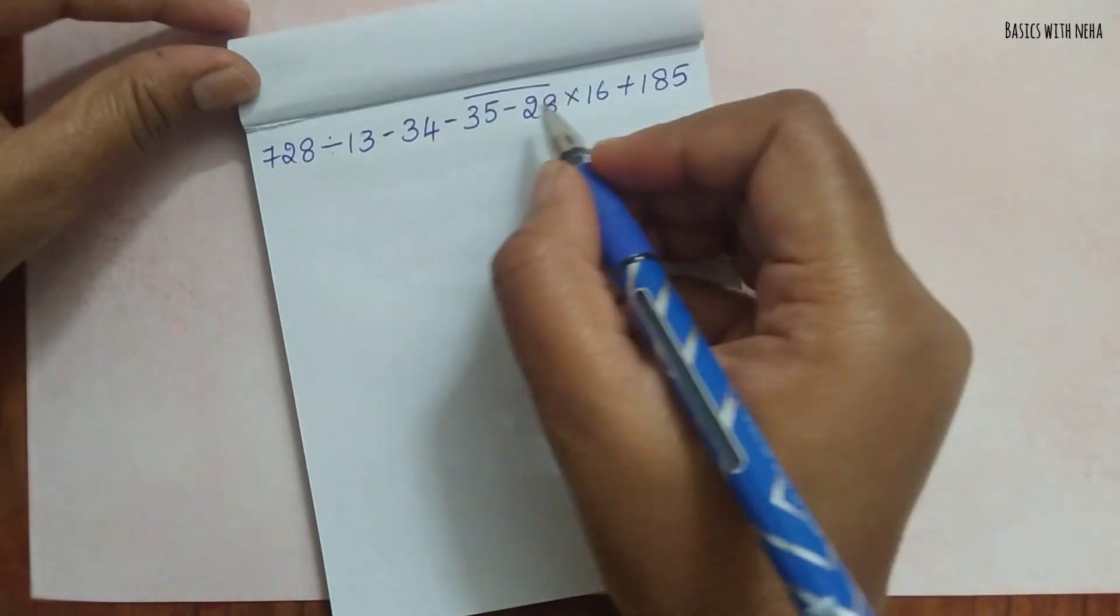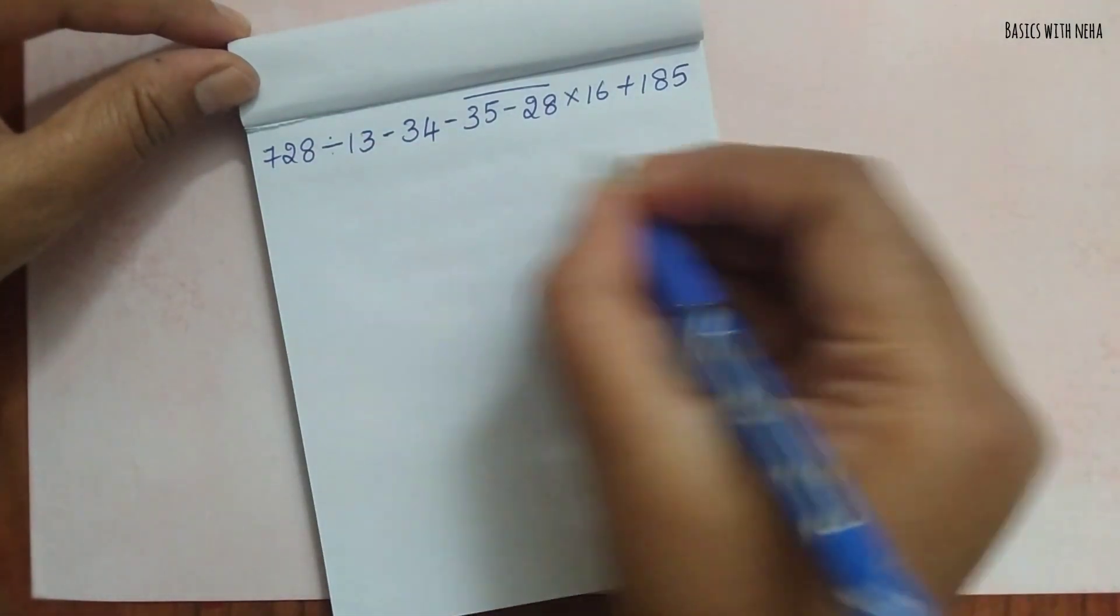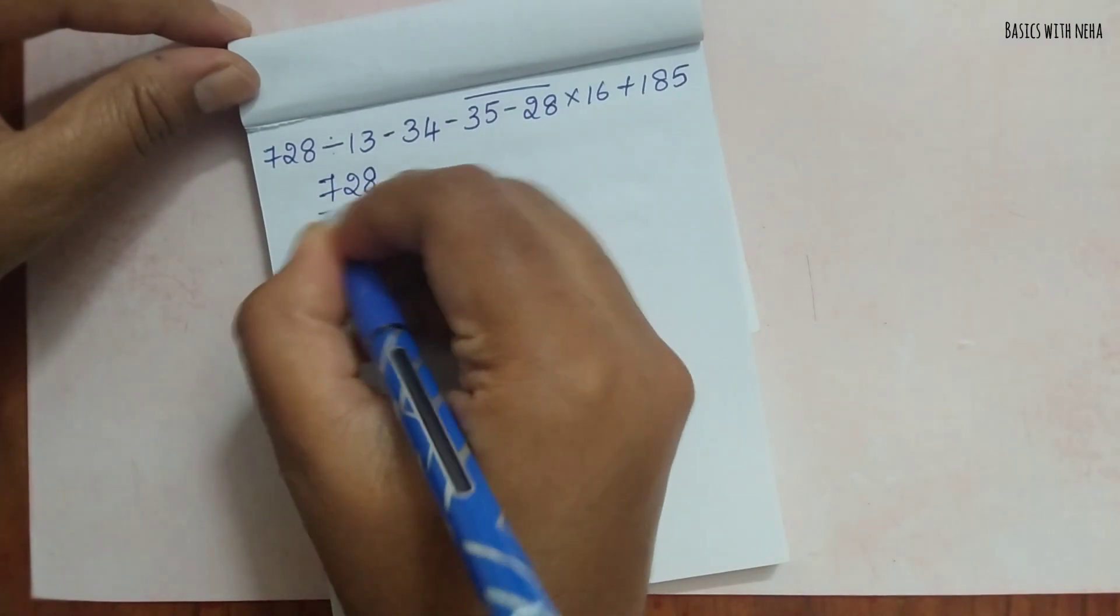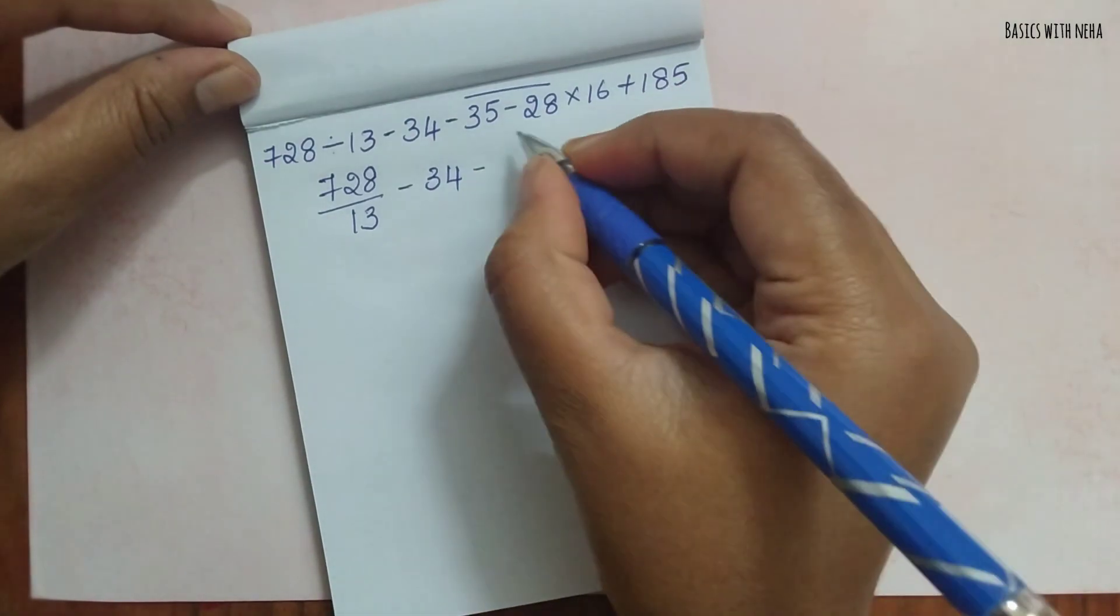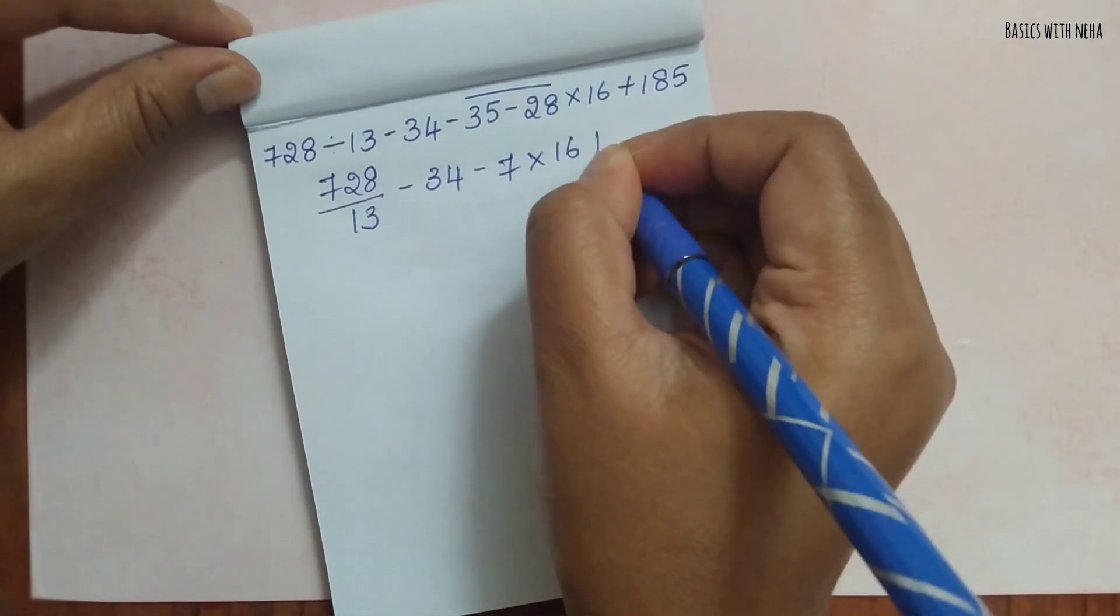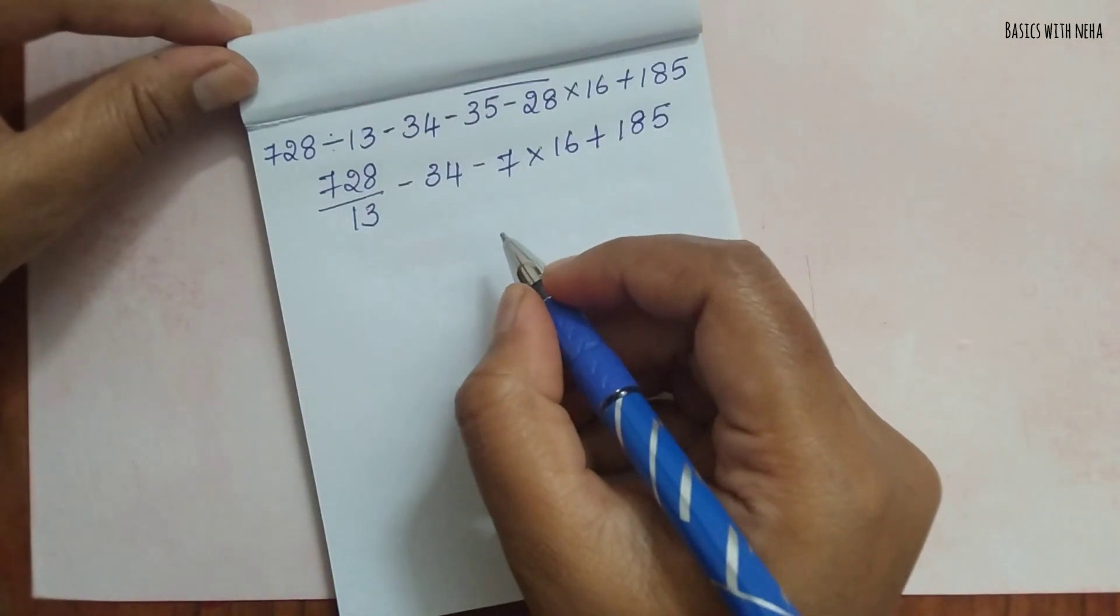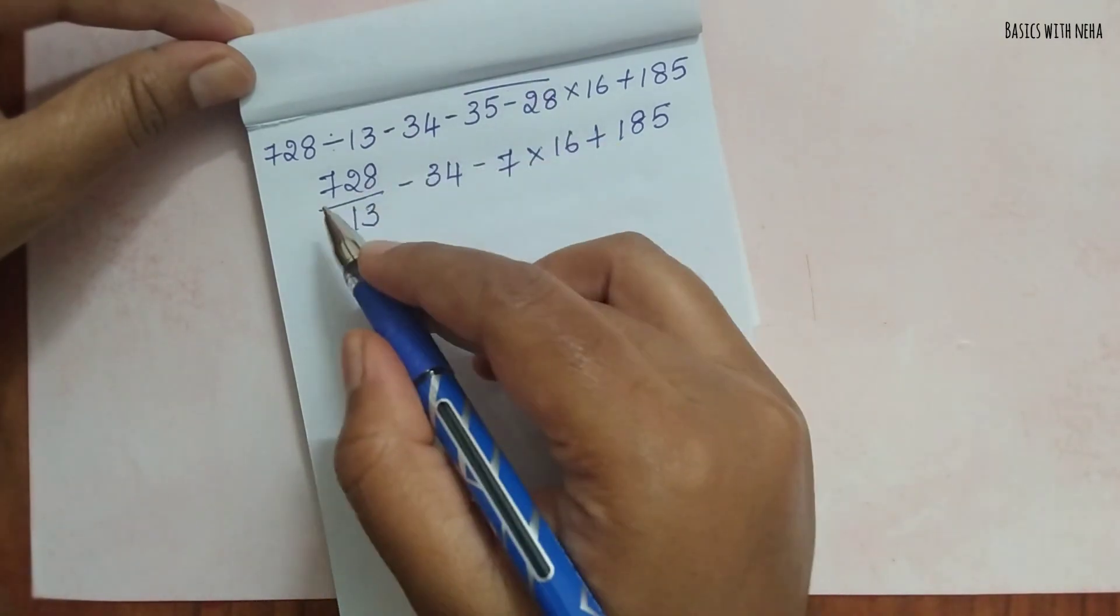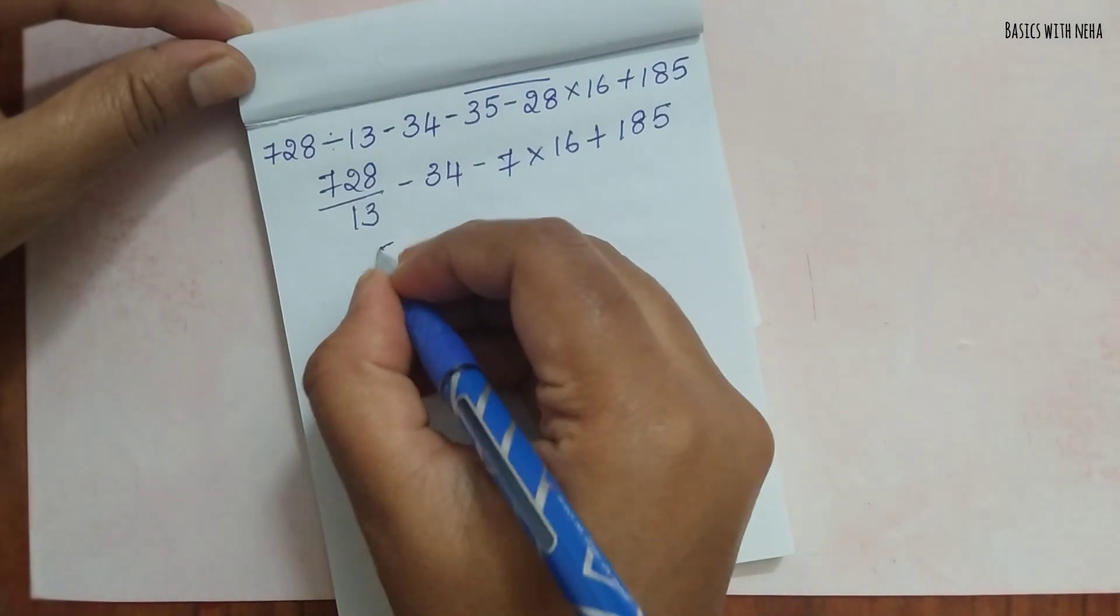I'm solving this question. So first we should remove this bar bracket. If I'm going to write in the next line, it will be 728 divided by 13 minus 34 minus 35 minus 28×16 plus 185. Now brackets are done. We should do the division, so 728 divided by 13 is 56.